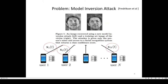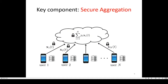However, recent works have demonstrated that even though the dataset is kept on the devices, model inversion attacks can reveal extensive information about the private training dataset of the users. To prevent such information leakage, secure aggregation protocols ensure that the individual model of each user is kept private both from other users and the central server. The goal of secure aggregation is that the server or users can learn nothing beyond the aggregation of all local models.